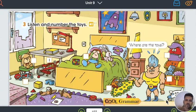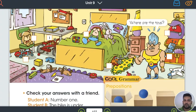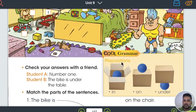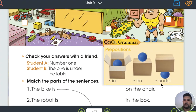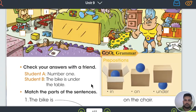In this activity, we're going to identify toys. And also, we're going to identify some prepositions. The prepositions we're going to use here are in, on, and under. As you can see, in the cool grammar. In, on, under. In, on, and under.